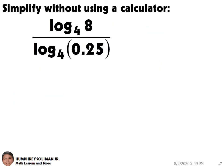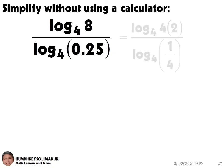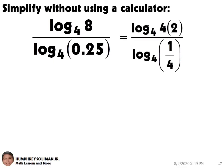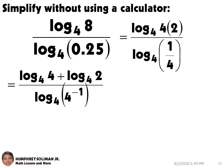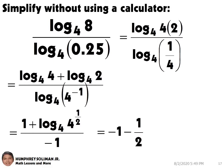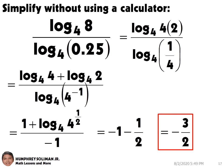Let's try another example: log base 4 of 8, over log base 4 of 0.25. In the numerator, we can have log base 4 of 4 times 2, and in the denominator, we can have log base 4 of 1 fourth. Simplifying the numerator, we can have log base 4 of 4 plus log base 4 of 2. And in the denominator, we can have log base 4 of 4 raised to negative 1, making the denominator equal to negative 1. While the numerator becomes 1 plus log base 4 of 4 raised to 1 half. Simplifying further, this becomes negative 1 minus 1 half, and this is equal to negative 3 over 2.